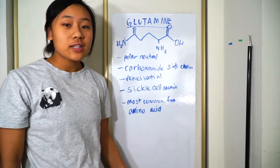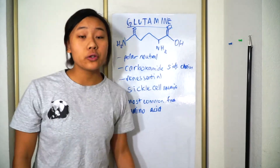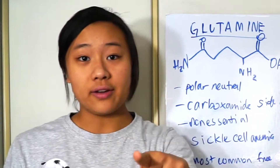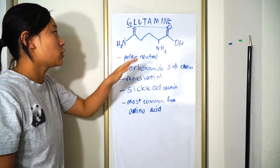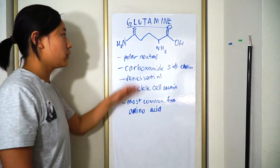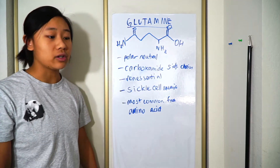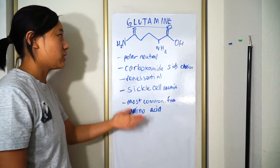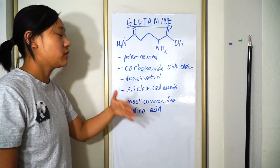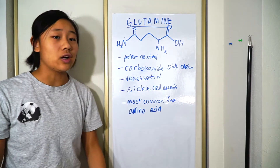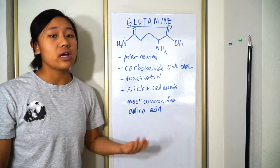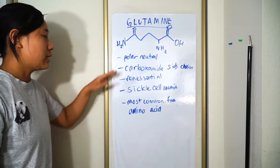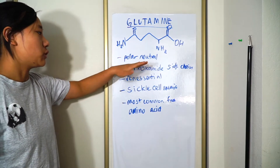Glutamine is the last of our polar neutral amino acids. This is the molecular structure for glutamine. You'll notice that the side chain is very similar to asparagine — it's basically just asparagine with another carbon, making the side chain longer. It also has the carboxamide side chain right here, and that's what makes it polar neutral.